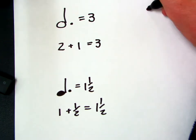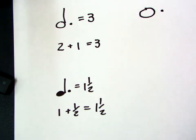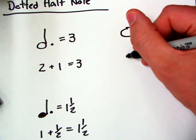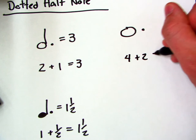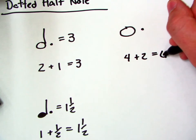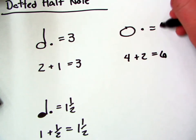Alright, we'll do one more just so we can see it. If we do a whole note, I'm going to put a dot on the side of it. Our whole note is worth four. And then this dot is half of that four, so plus two equals six. So that means a dotted whole note would be worth six beats.